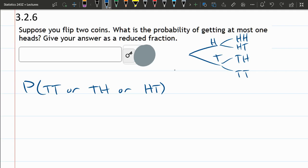So as long as we get not heads-heads, we're favorable. So there's three out of four total outcomes.